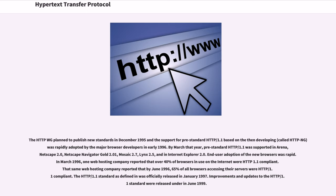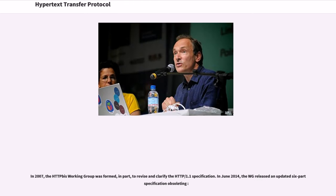Improvements and updates to the HTTP 1.1 standard were released in June 1999. In 2007, the HTTP working group was formed, in part, to revise and clarify the HTTP 1.1 specification. In June 2014, the WG released an updated six-part specification.